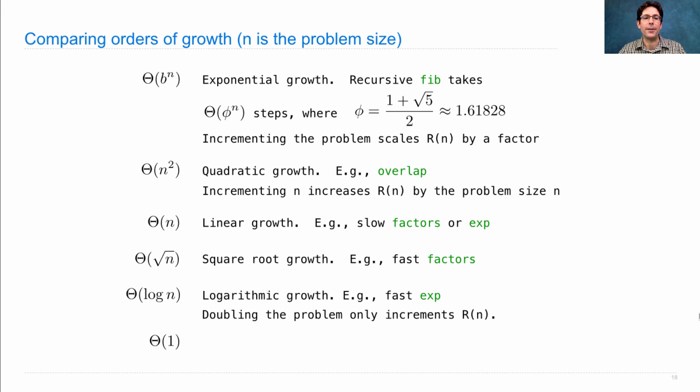And then the best possible scenario is theta 1, which is constant time. The input size doesn't matter at all. So if you take in n and you return n plus 1, there's only one step to getting there no matter how big n is. That's a constant time procedure.